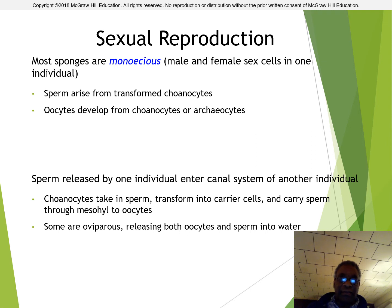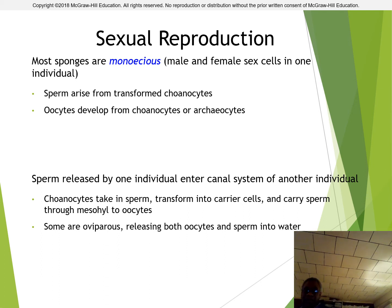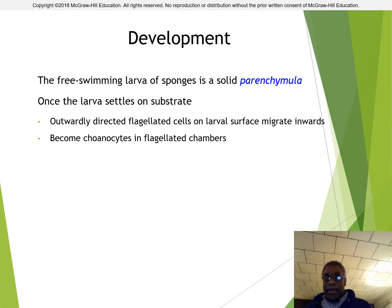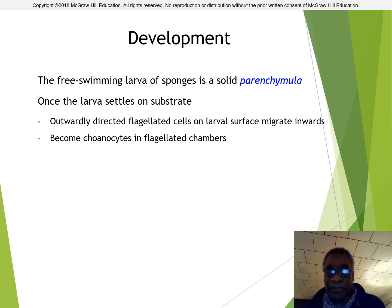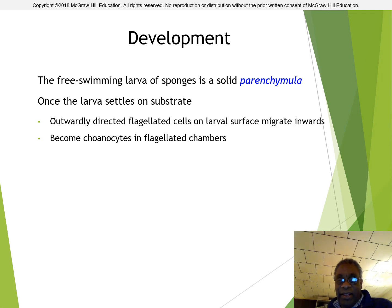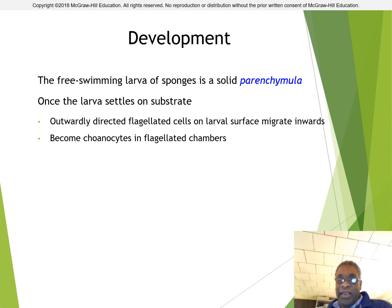Most sponges are monoecious, meaning they have male and female sex cells in one individual. The sperm arrives from transformed choanocytes. The oocytes, or egg cells, develop from choanocytes or archaeocytes. Usually, sperm released by one individual will enter the canal system of another individual and allow for fertilization. The free-swimming larval sponge is a solid parenchymula. The parenchymula will settle on the surface, and once it settles, it starts to metamorphose into a different shape — from a solid parenchymula, the flagellated cells that exist on the outside of the larvae migrate to the inner side and form the flagellated chambers associated with adult sponges.